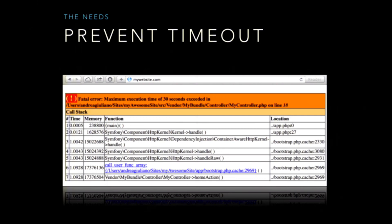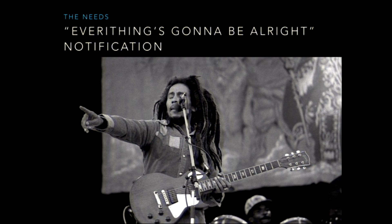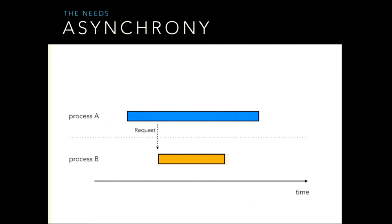Moreover, we want to guarantee eventual delivery. We want a system to which we send a task to do and the system guarantees us that sooner or later the job will be done. For doing so, we need a notification system. We need to know when the job is sent to be processed and we need to know when the processing is finished.